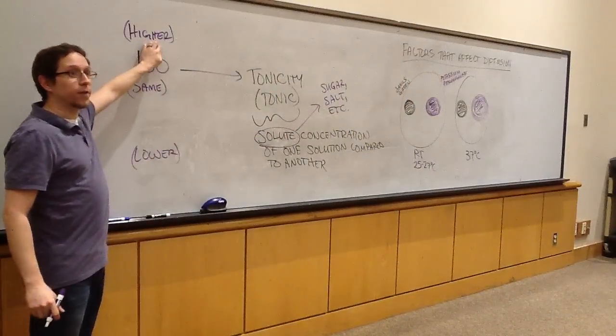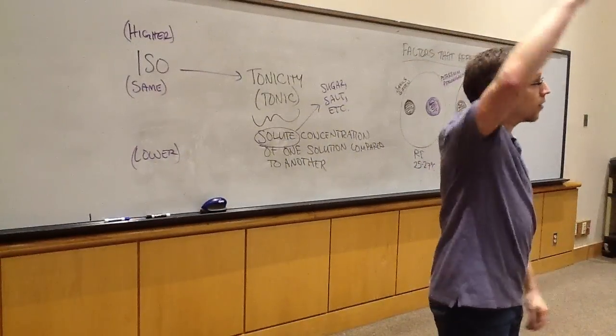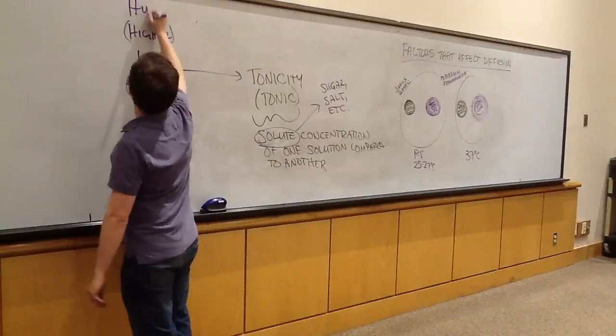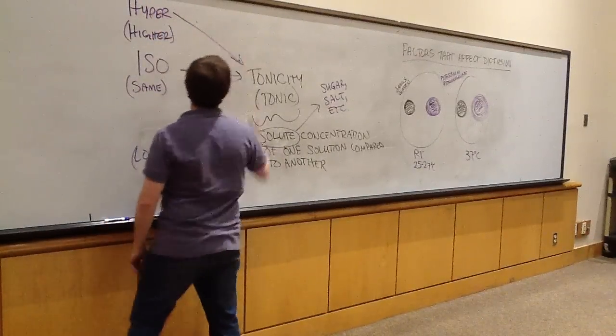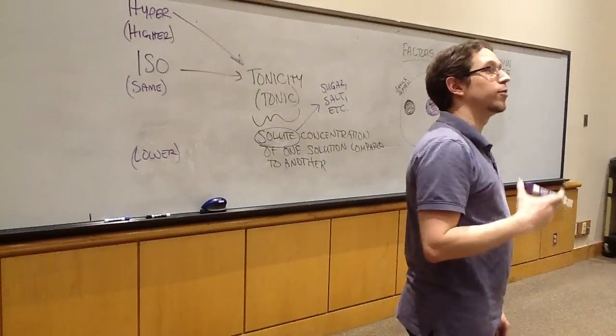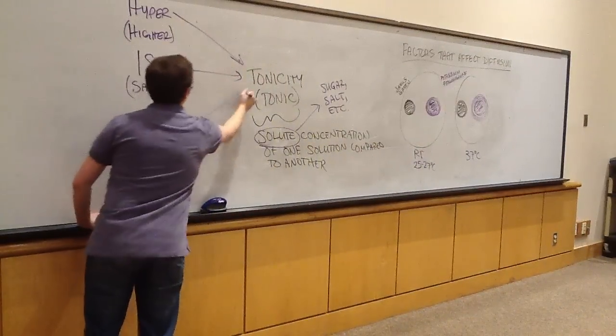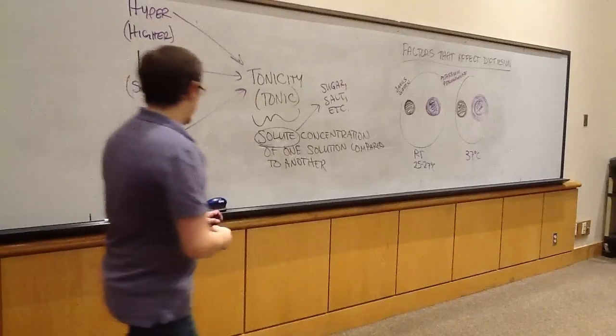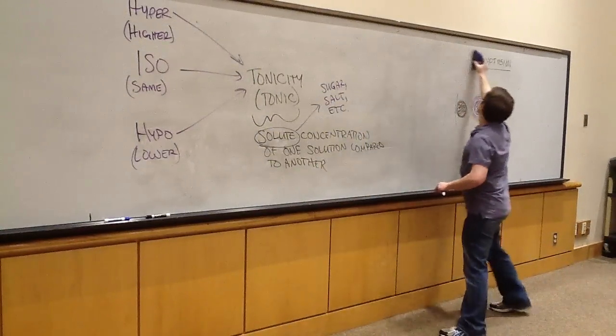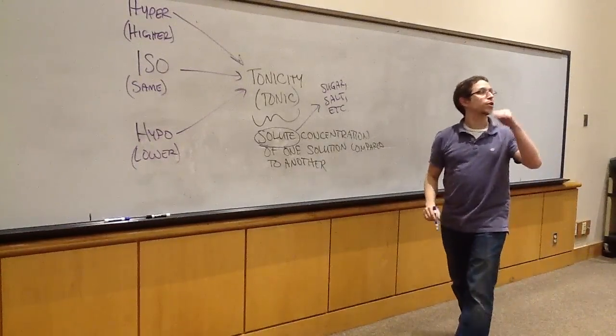Let's start with the prefix that means the same. When you had isotopes or isomers, what prefix means the same? Iso. So an isotonic solution has the same sugar, salt, or whatever concentration as the other solution. For the higher prefix, a hypertonic solution has a higher solute concentration. And if somebody's diabetic and has low blood sugar, we say they are hypoglycemic. So hypo means low.